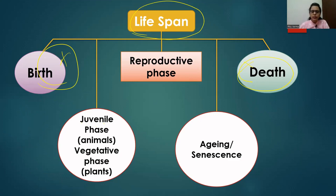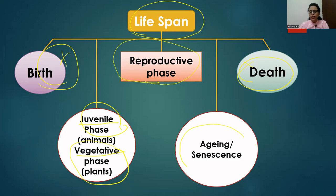The first phase is called juvenile or vegetative phase — juvenile in case of animals, and vegetative in case of plants. The second important and long-lasting phase is known as reproductive phase. The last phase is the phase of aging, which is also called senescence or senescent phase.